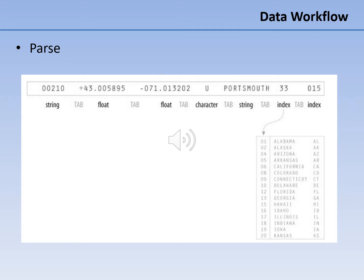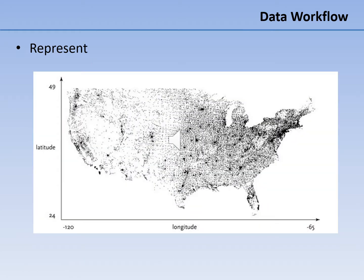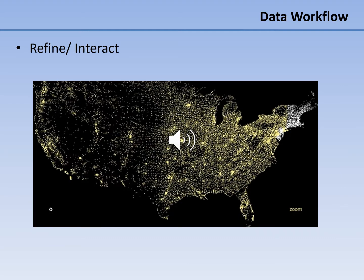Spreadsheet programs, for example, parse data to fit into a cell of a certain size. Parsing can be done in natural language, computer language, or data structures. Data mining is a process used by companies to turn raw data into useful information. Filtering data in a spreadsheet means setting conditions so that only certain data are displayed, making it easier to focus on specific information in a large dataset or table. To represent data means to create a basic visual model such as a map. We refine data to make it better for presentation.